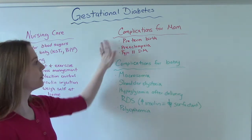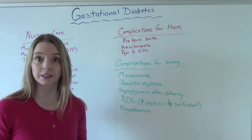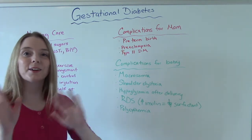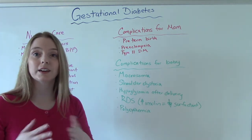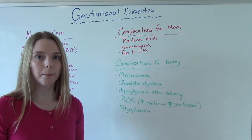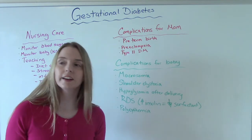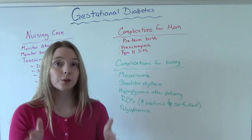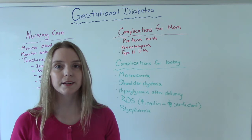When it comes to complications, we have maternal and baby complications. For mom, she is at risk for giving birth to a preterm infant, and she's at risk for preeclampsia — one of the risk factors for that is diabetes. One is blood sugar and one is blood pressure, but oftentimes people can have both at the same time. And then type two diabetes — the statistic right now is like 60% of women who get gestational diabetes will get type two diabetes later in life. So if you as the nurse can do really good patient teaching right now, hopefully we can prevent them from having type two diabetes later in life.